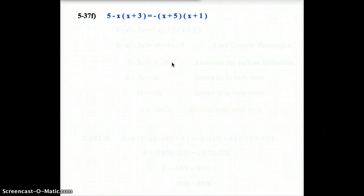So, question 37F reads 5 minus x times the sum of x plus 3 equals negative times x plus 5 times the sum of x plus 1.